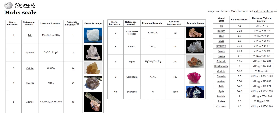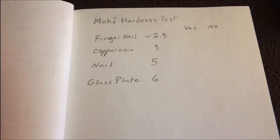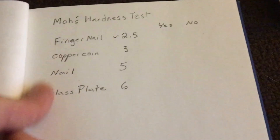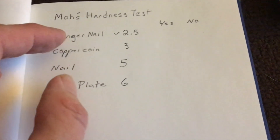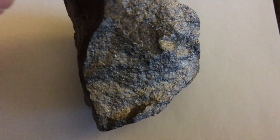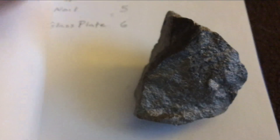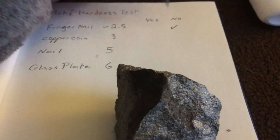We can't get exact numbers doing this, but we can tell relative hardness. Here are my comparison tools: copper coin, nail, and glass plate. I'm going to check yes or no — whether any of these things scratch what I'm calling the mineral. So let's start with the fingernail. Taking my fingernail right across it — no, it doesn't really scratch it. My fingernail got a little scratched. Now the copper coin — not seeing any scratch. So: fingernail, no; copper coin, no. Now we do the nail.